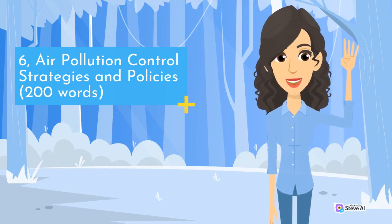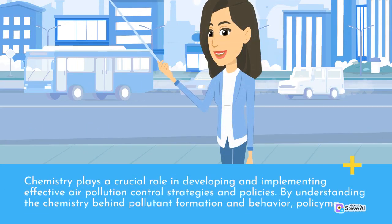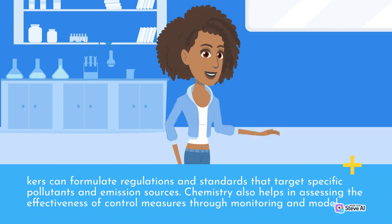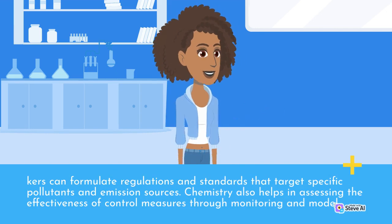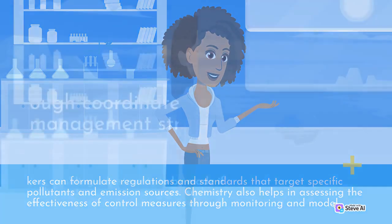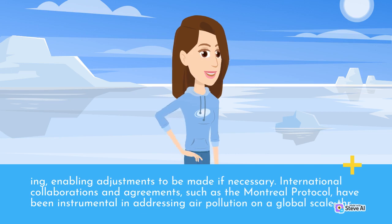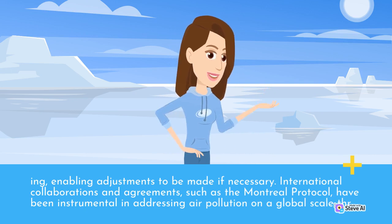Air Pollution Control Strategies and Policies. Chemistry plays a crucial role in developing and implementing effective air pollution control strategies and policies. By understanding the chemistry behind pollutant formation and behavior, policymakers can formulate regulations and standards that target specific pollutants and emission sources. Chemistry also helps in assessing the effectiveness of control measures through monitoring and modeling, enabling adjustments to be made if necessary. International collaborations and agreements, such as the Montreal Protocol, have been instrumental in addressing air pollution on a global scale.